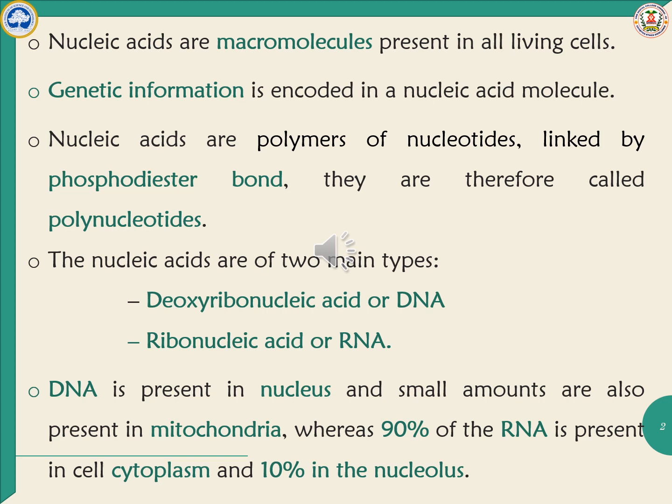Nucleic acid is of two types: deoxyribonucleic acid, otherwise called DNA, and ribonucleic acid, otherwise called RNA. DNA is present in the nucleus, and a small amount is also present in mitochondria, so mitochondrial DNA is also present in our system. Whereas 90% of RNA is present in the cytoplasm and 10% is present in the nucleolus.